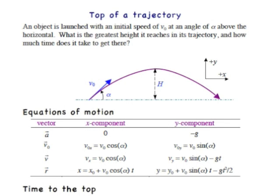An object is launched with an initial speed of V0 at an angle of alpha above the horizontal. What is the greatest height it reaches in its trajectory, and how much time does it take to get there?